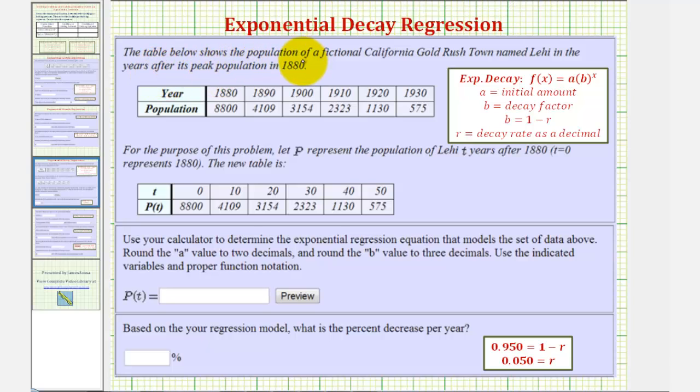The table below shows the population of a fictional California gold rush town named Lehigh in the years after its peak population in 1880. Notice after 1880 the population declines.